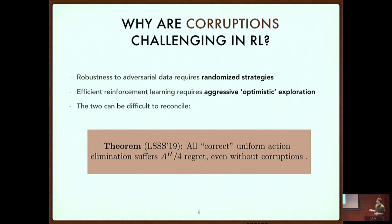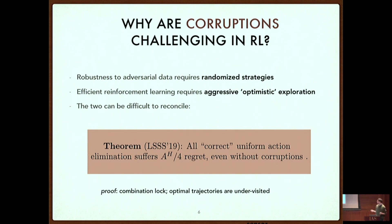So things that work in the bandit world and in corrupted supervised learning settings don't immediately work in RL. The proof uses the standard combination lock instance. The key intuition is that optimal trajectories — necessary to get the value functions we need to chase — are not visited with sufficiently high probability; in fact, exponentially small probability, which leads to the lower bound.